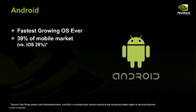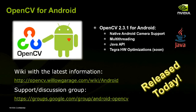Now what I'm talking about for mobile is more on the Android side. Android is the fastest growing operating system ever, currently about 39% of the smartphone market. It has surpassed iOS to become the dominant operating system for smartphones, largely supported by Google. What we've been working on for the past several months is bringing OpenCV to Android — so now that same library available on x86 processors on Windows, Mac, and Linux is also available on Android, optimized for ARM processors.